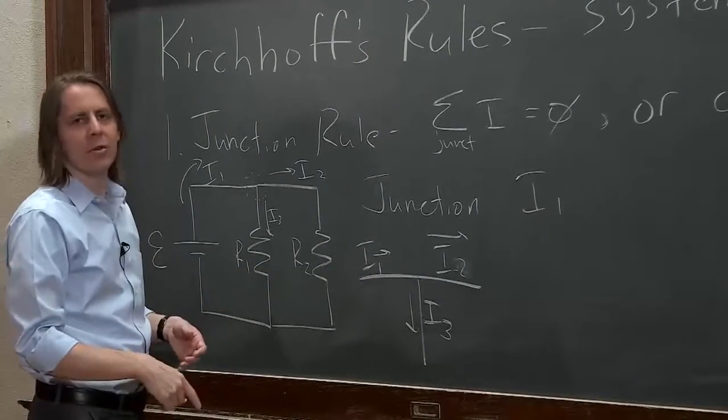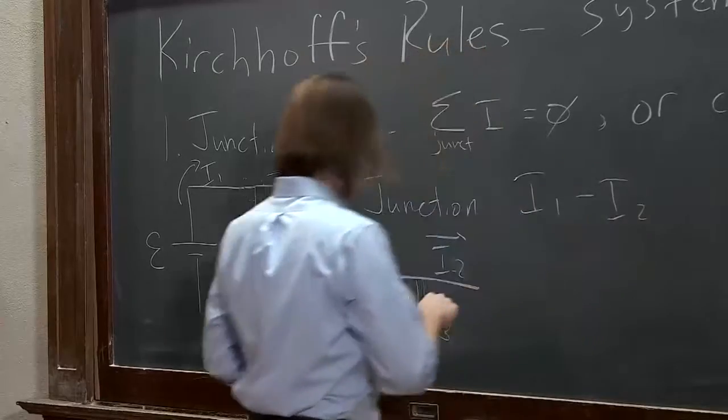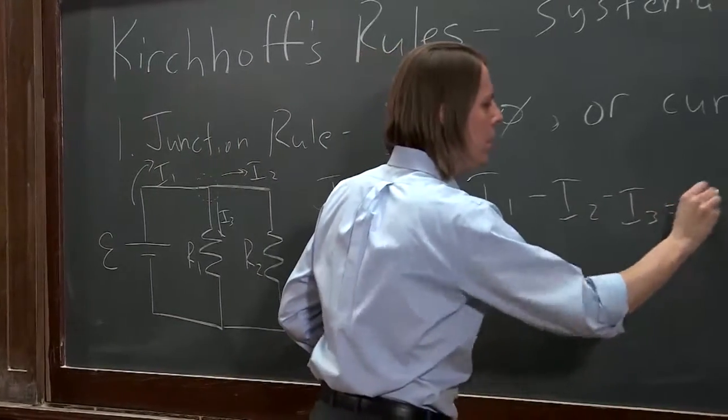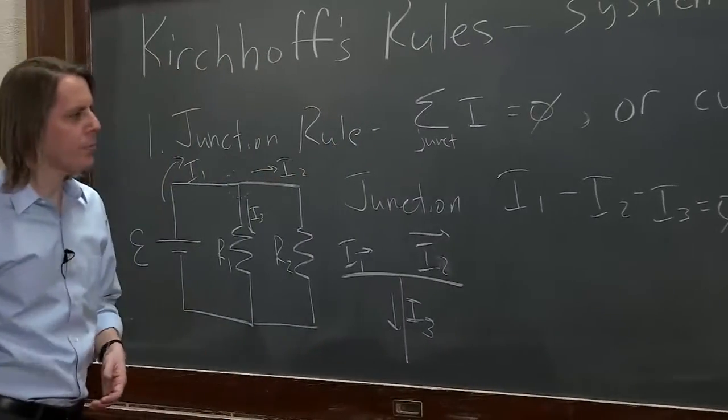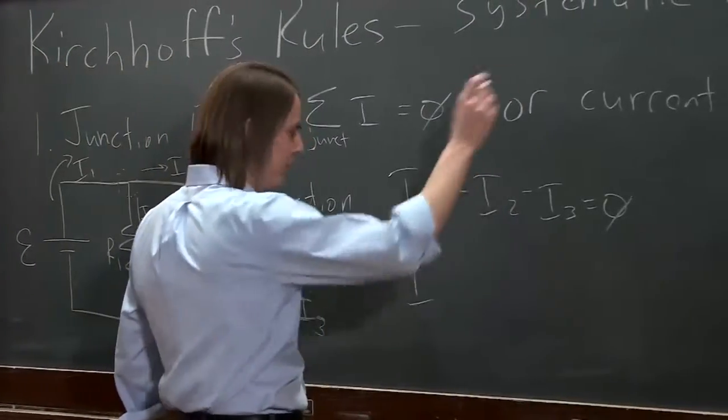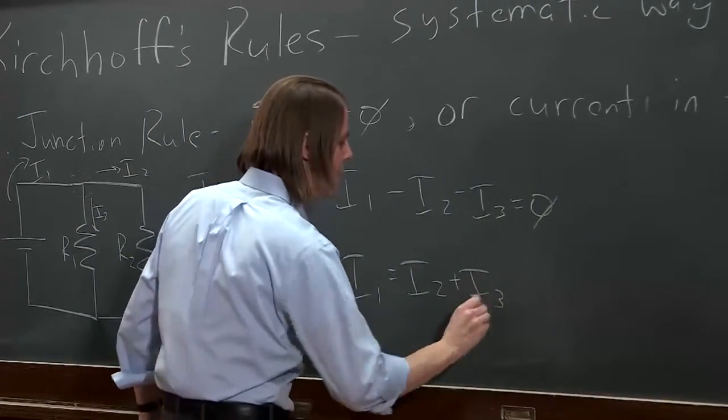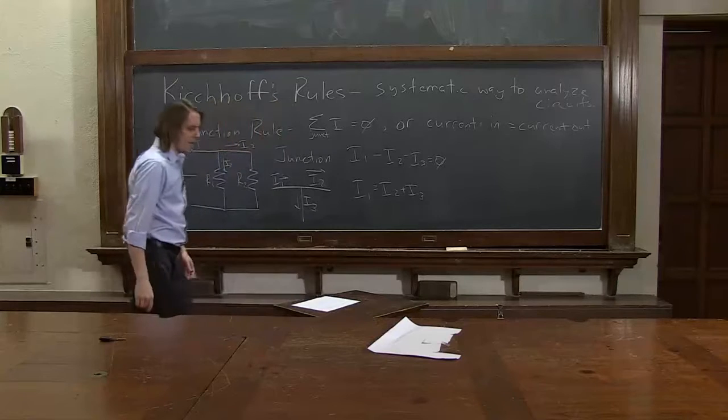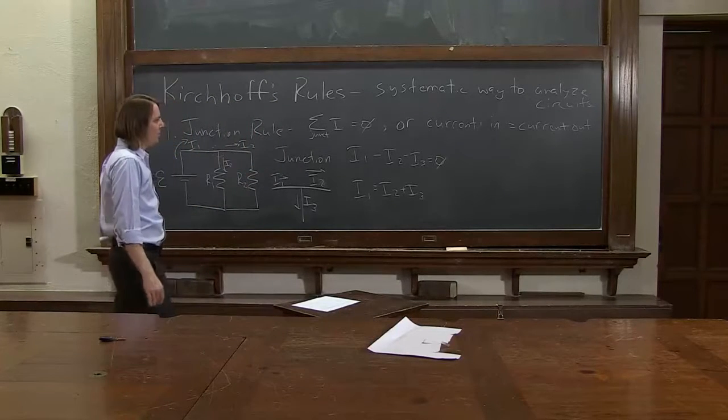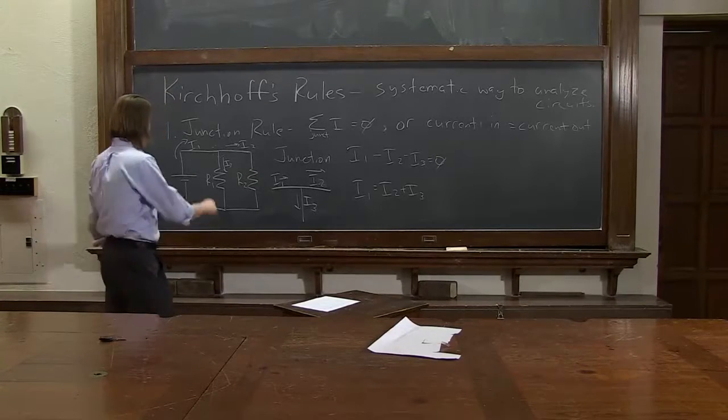and the other two go out. So when one goes out of a junction, it's negative. So minus I2. And then I3 is exiting the junction, minus I3 equals zero. Or if we wanted to solve it for I1, we would just simply say the other statement that I gave: I1 equals I2 plus I3. That is, you can't lose current. So this is a very simple way to apply Kirchhoff's junction rule in this case.